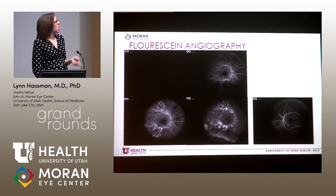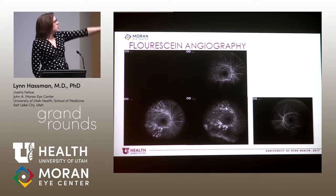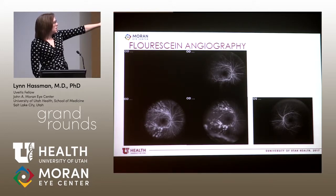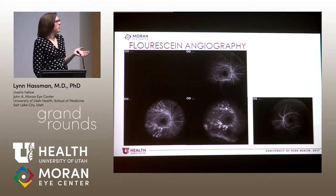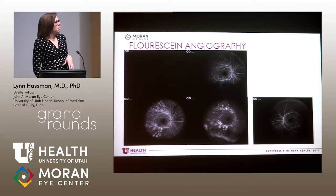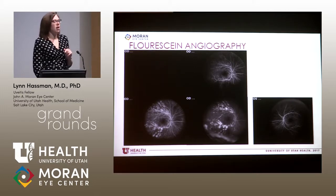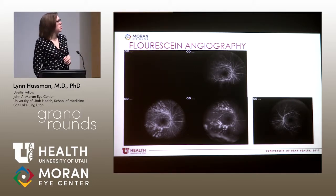Fluorescein angiography in the right eye, the more affected eye, shows early blockage and then late staining, which is typical of an inflammatory lesion. The left eye has pretty minimal changes, but in the area of the white spots there is also some staining.